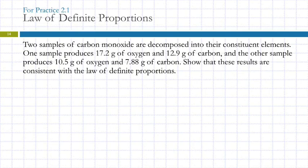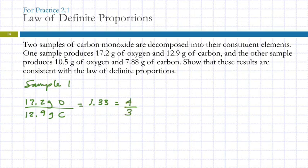So let's look at sample one. Sample one, 17.2 grams of oxygen and 12.9 grams of carbon. 17.2 divided by 12.9. My calculator says 1.3333333. So that is equivalent to a fraction of one and a third. Four thirds. Four to three. Double check that. Yeah. So four thirds.